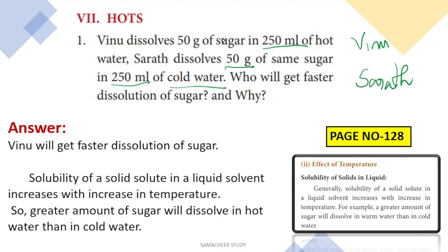So we have two students — Vinu and Sharath — performing the same experiment under different conditions. Vinu uses 50 grams of sugar in 250 ml of hot water, while Sharath uses 50 grams of sugar in 250 ml of cold water. The experiment is the same, but the temperature condition is different. Vinu uses a higher temperature — hot water — while Sharath uses cold water.